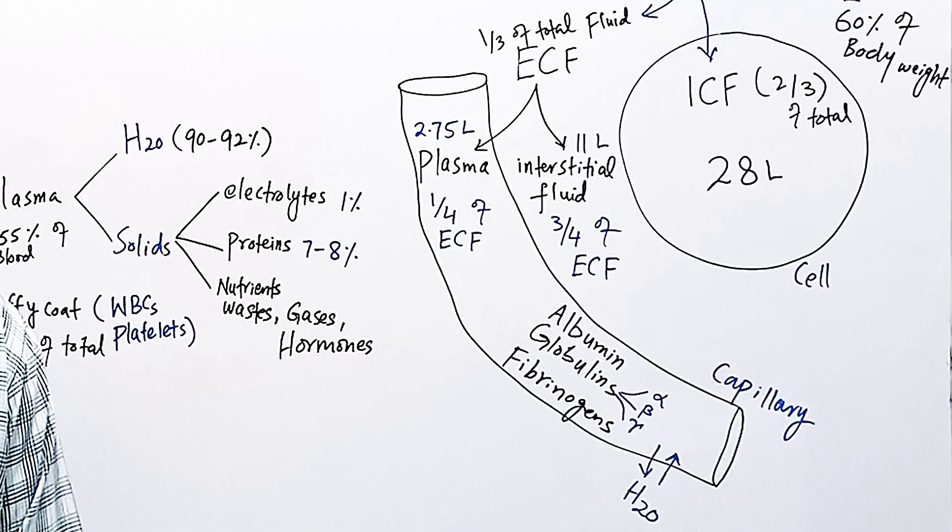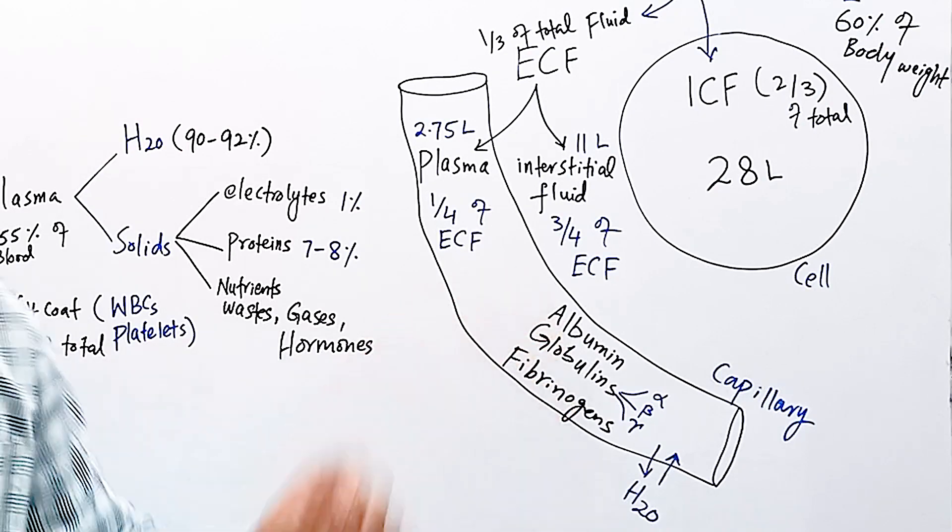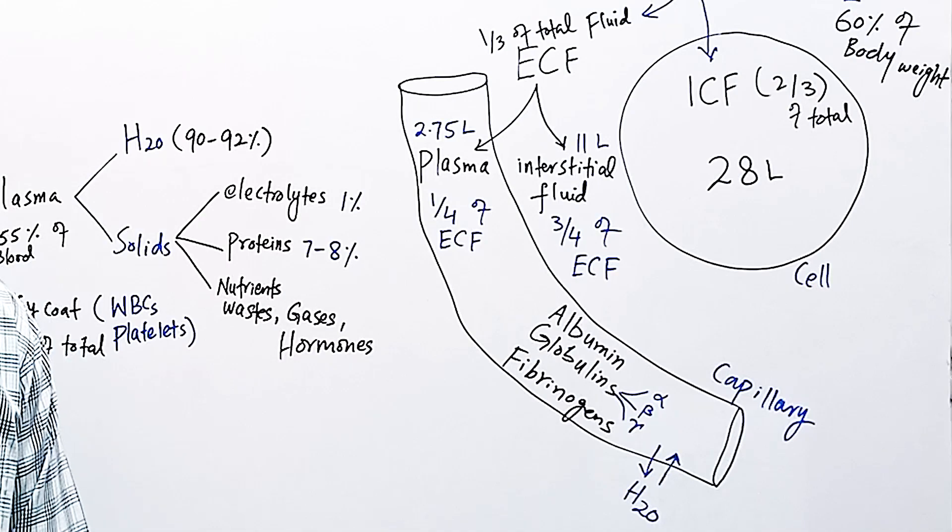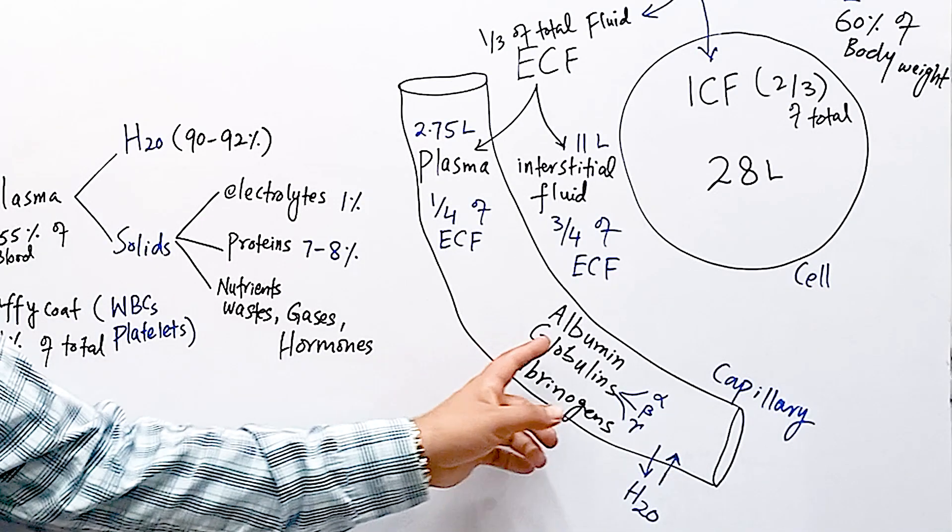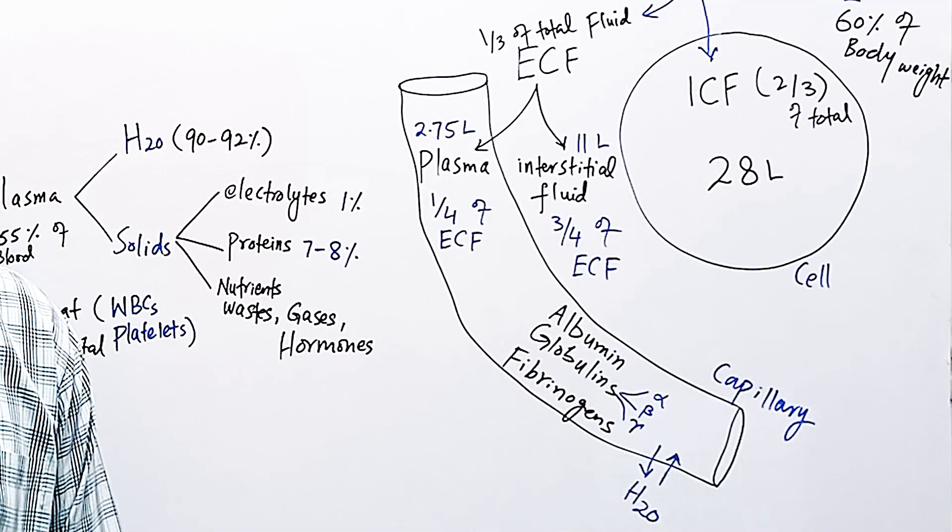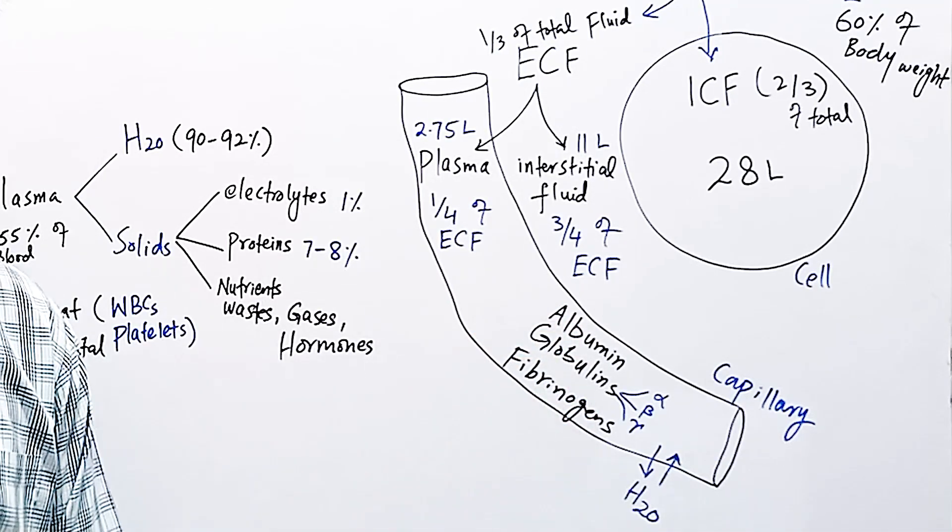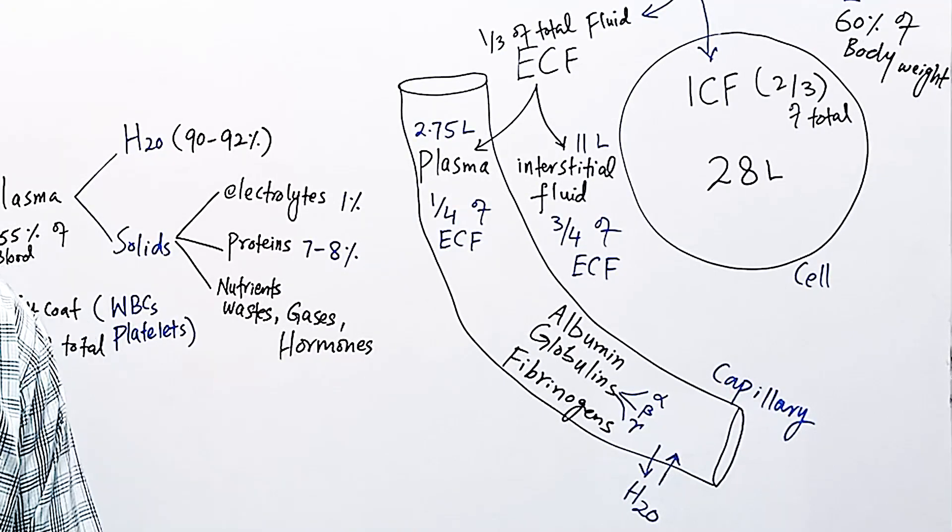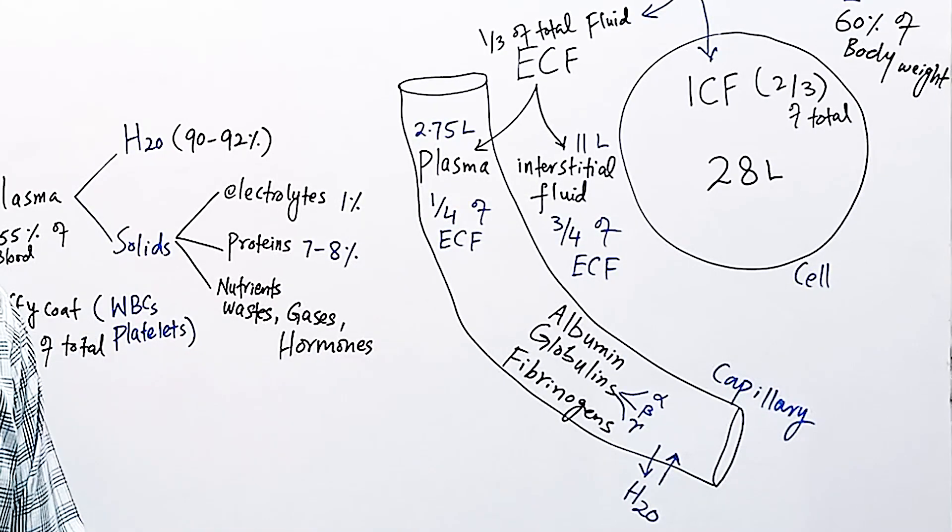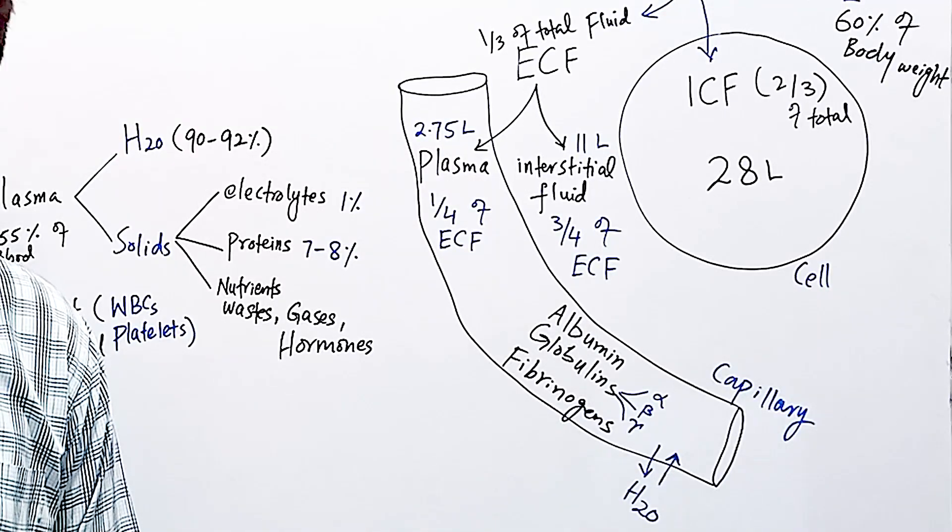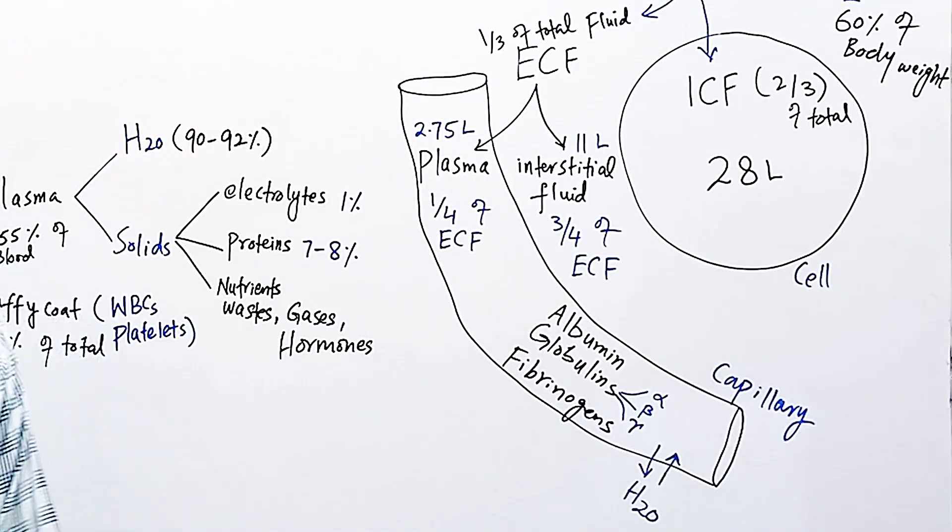If we specifically talk about albumin features: albumin is 60 percent of total plasma proteins. Total plasma protein is seven to eight grams per deciliter, and albumin is 4.5 to 5.5 grams per deciliter. Albumin is water soluble and heat coagulable. It's synthesized by liver cells, molecular weight is 69,000, and it is precipitated by fully saturated solution of ammonium sulfate.